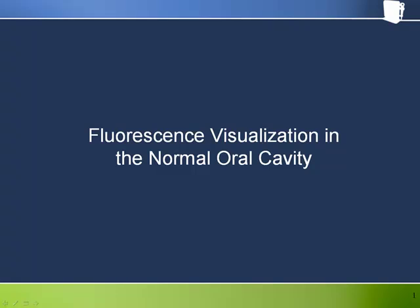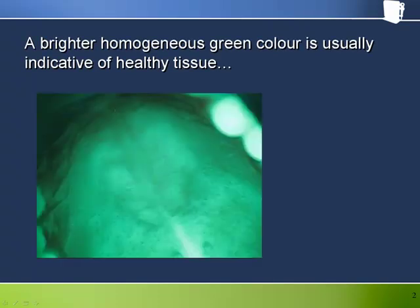Let's take a tour of the oral cavity and see up close some pretty typical examples of normal anatomy and its variation using fluorescence visualization with Velscope. A brighter homogeneous green color is usually indicative of healthy tissue. This is due to the combination of predominantly green fluorescence from both the epithelial and stromal layers.